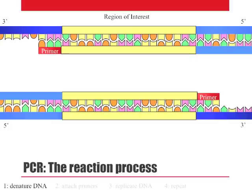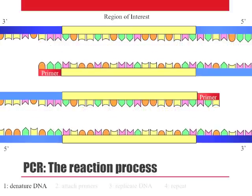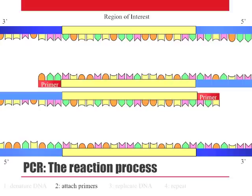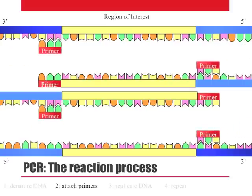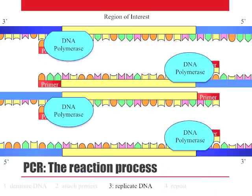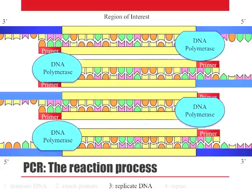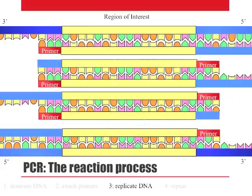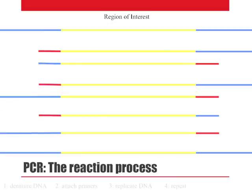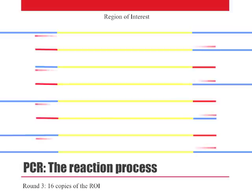After the first round of DNA replication, we repeat. First we denature, then we bind primers, and finally we replicate the DNA downstream of the primers. After just two rounds of PCR, it's pretty easy to count that we have eight, or two to the third copies. If we repeat the process again, we will end up with 16 copies, or two to the fourth.